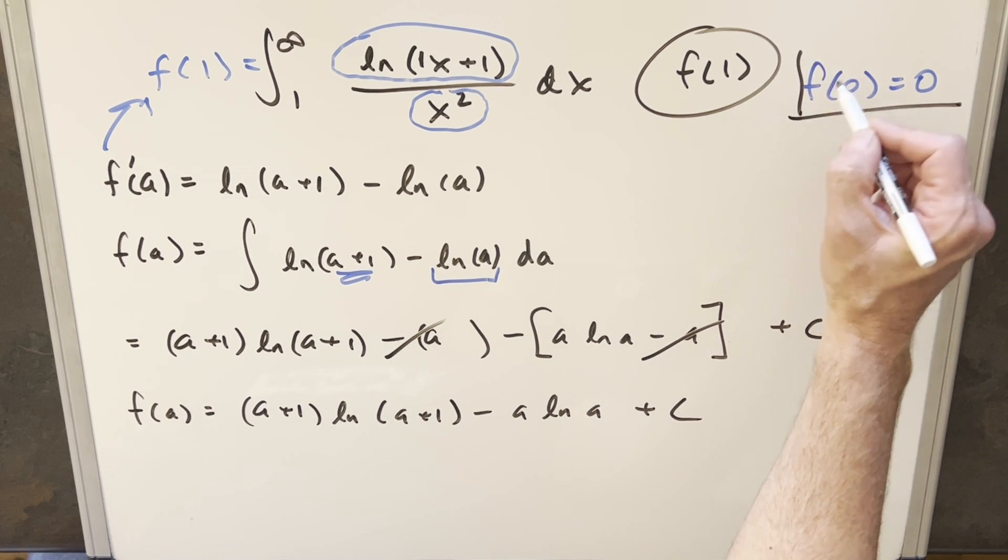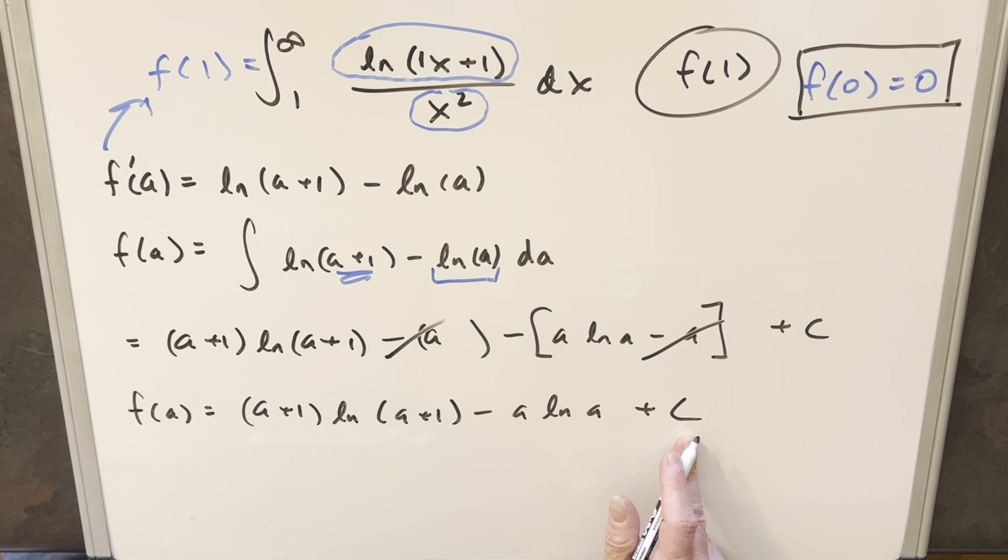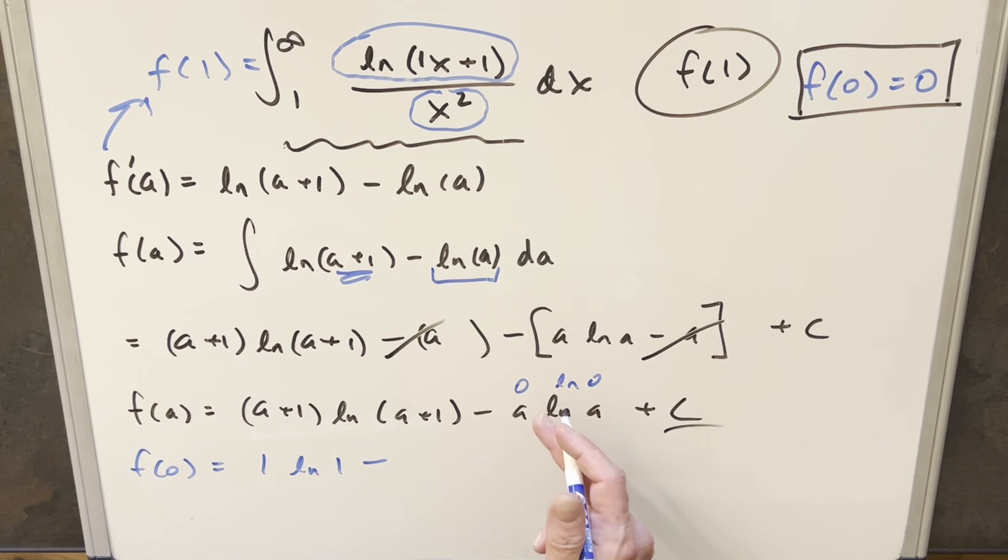We come back and use this condition that we established at the beginning, because we want to get rid of this plus c. We want a numeric value without c in it. So let's see what happens when I evaluate this at 0. This is just going to become 1 ln 1 minus, then here you're going to have 0 natural log 0. Technically this is an indeterminate form, but when you have 0 in front of the natural log, the 0 is going to be more powerful. So I'm just going to put this in as 0. And then we have our plus c here. Natural log of 1, this is also 0. And this whole thing is equal to 0. So for this all to be true, we need our c value equal to 0. So we can just get rid of this, and we've established our f of a value.